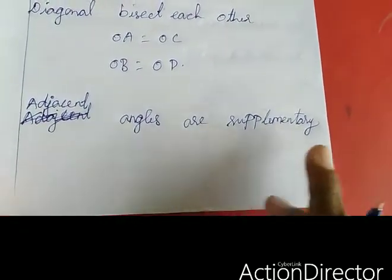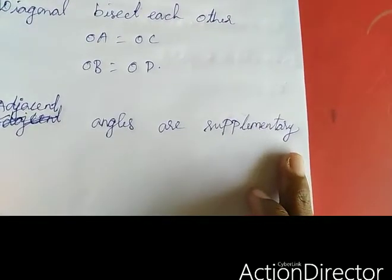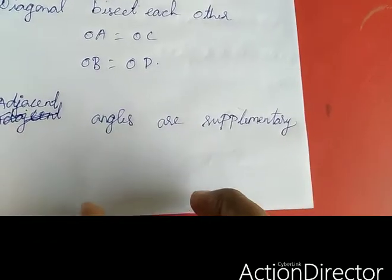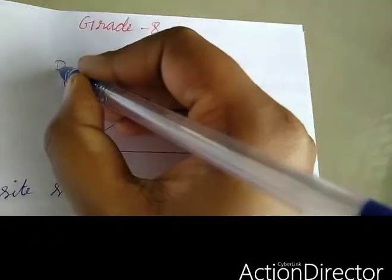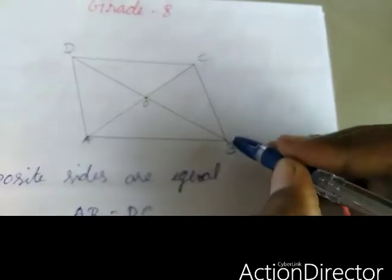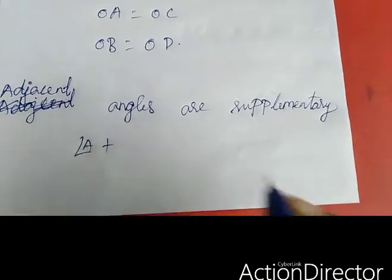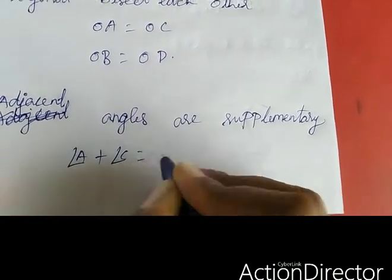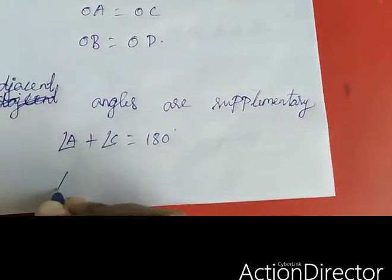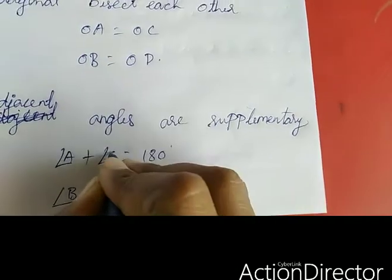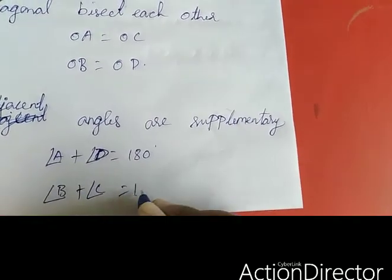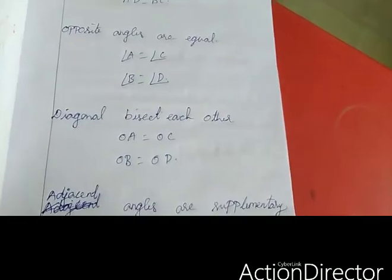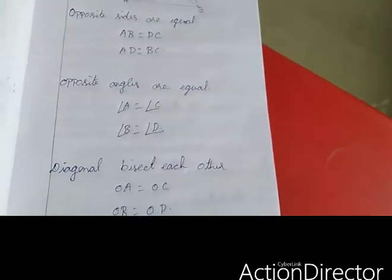Next, adjacent angles are supplementary. Supplementary means if you add the two angles you will get 180 degrees. Adjacent angles means A and D — if you add A and D you get 180 degrees, as well as B and C you get 180 degrees. In this exercise we are going to apply these properties.